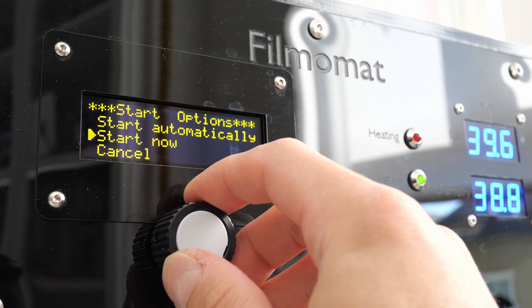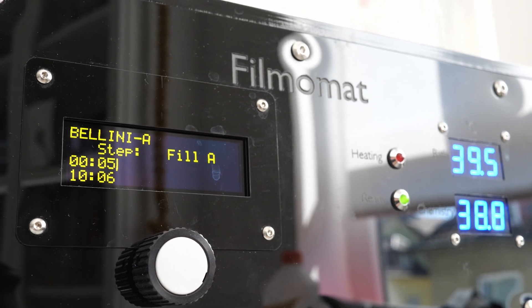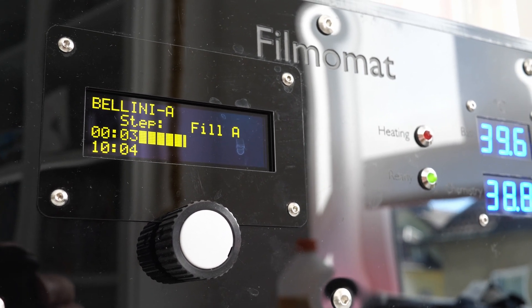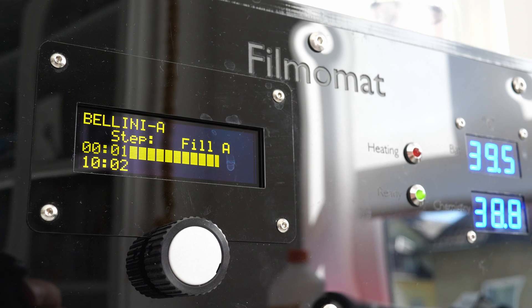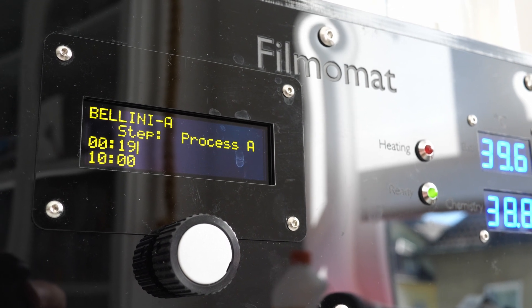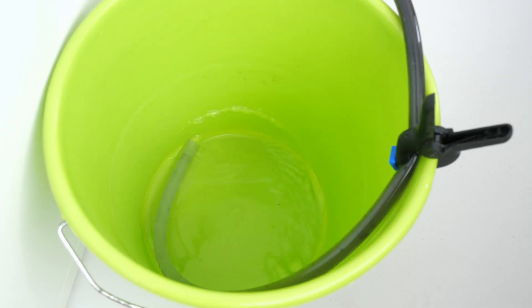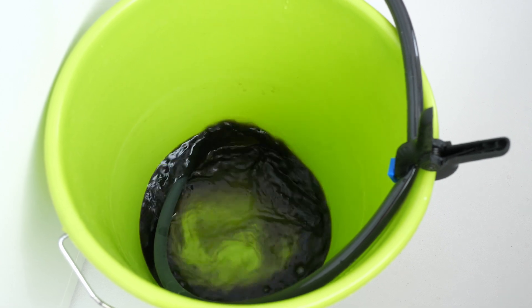Once the pre-bath is poured in, we can then start the process. During the first rinse, you can already see the ramjet coming off.